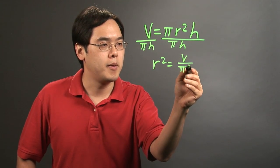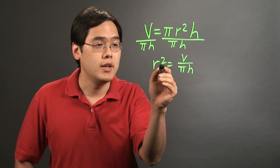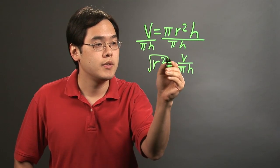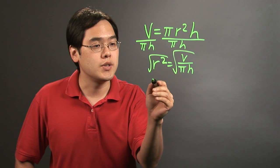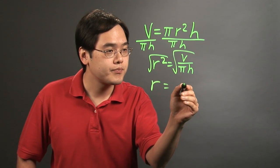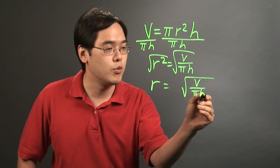Now where you want to go from here is to solve for r. To get rid of the square, take the square root of both sides. So you have r = √(V/πh).